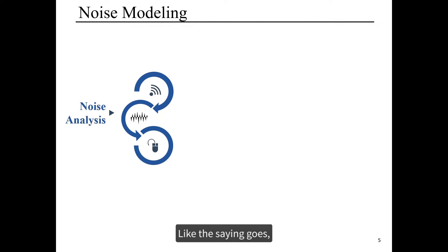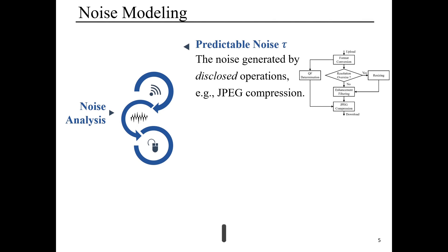Like the scene goes, try your best and God will do the rest. We first try our best to simulate the noise generated by disclosed operations, like resizing and compression, which relies on a deep neural network and embedded differentiable JPEG layer.